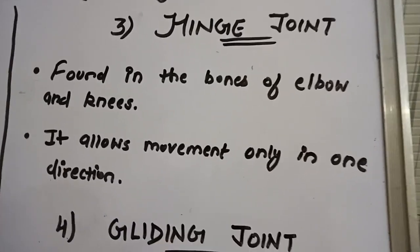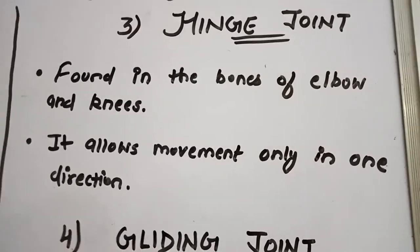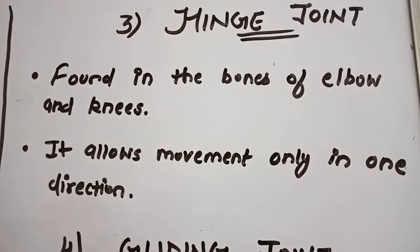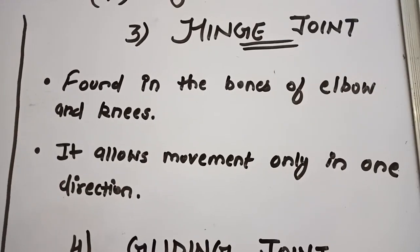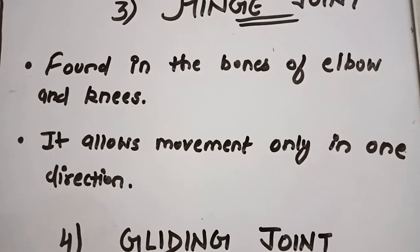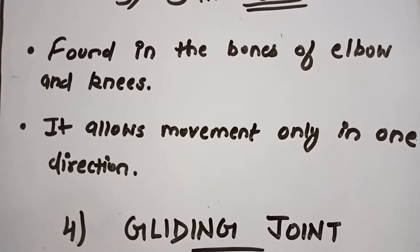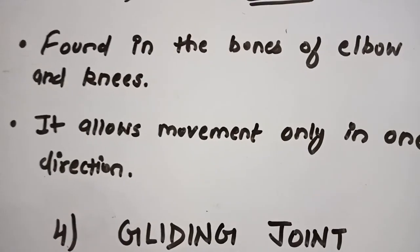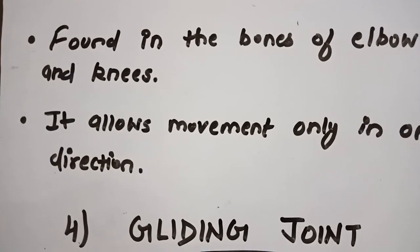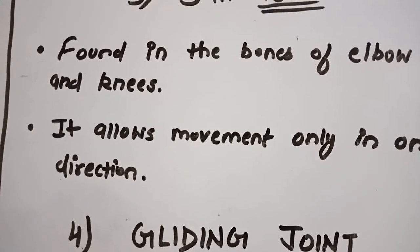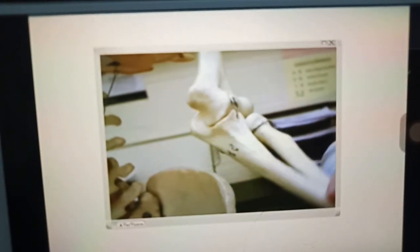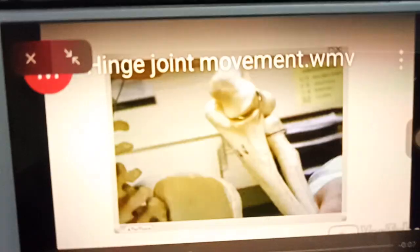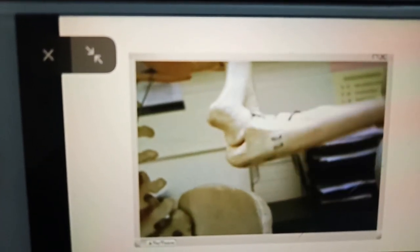The third type is the hinge joint. It is found in the bones of the elbow and knees. It allows movement only in one direction — remember, you can move your knees and elbows only in one direction. You can see the movement of the hand allows movement only in one direction.